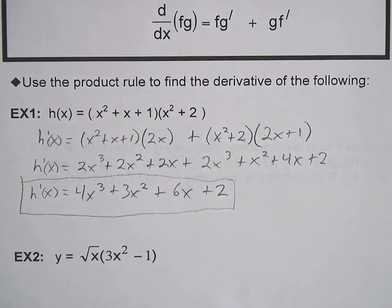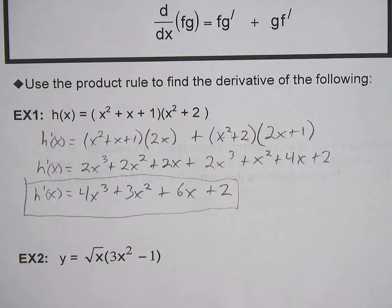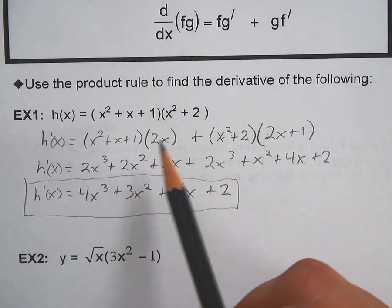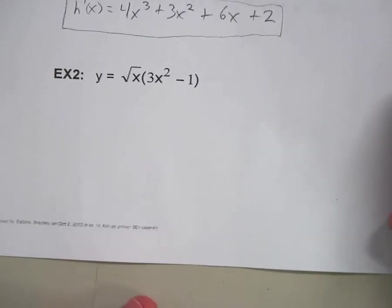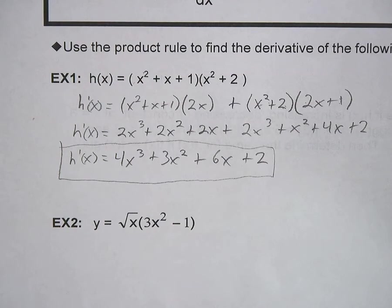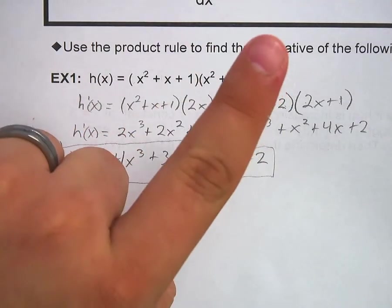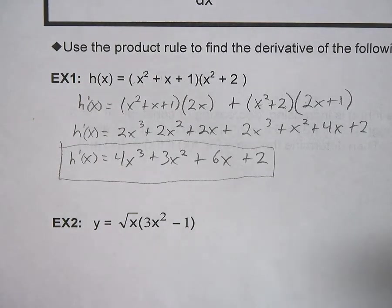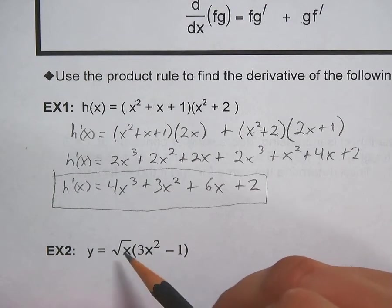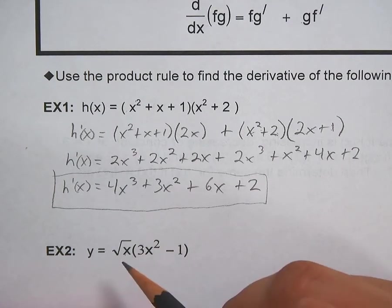Keep in mind that the product rule is most useful when dealing with much larger equations. It's always easier to take derivatives then multiply through, rather than multiplying two big polynomials together first and then differentiating. My general rule: if there is only one term in one of the factors — like in example two — just multiply it through and use the power rule.